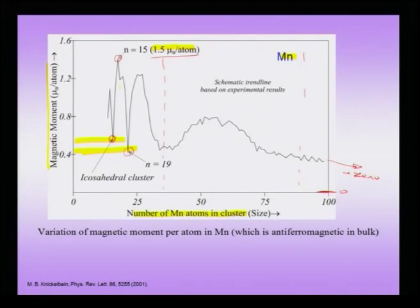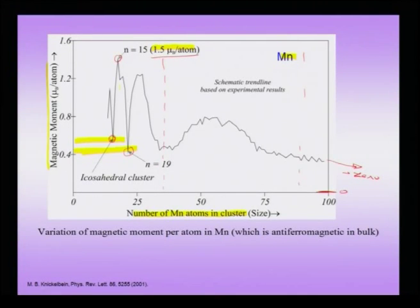The essential message of studying anti-ferromagnetic clusters is that materials which are anti-ferromagnetic with zero magnetization in bulk can behave like ferromagnets in the small cluster regime. In the small cluster regime, as with ferromagnetic clusters, there are large oscillations which finally die down in the large cluster regime and then the nano crystal regime. The icosahedral or close-packing geometry explains the large variations in magnetization.